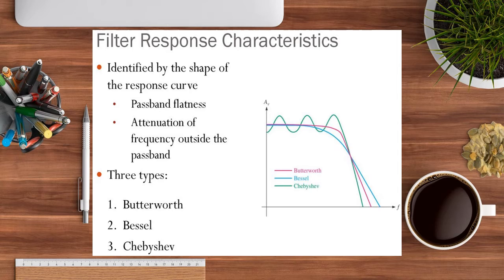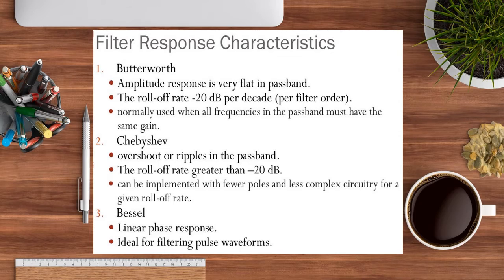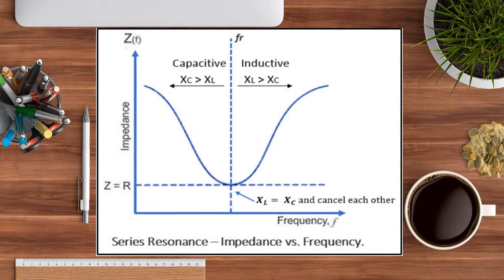Frequency response is important. The filter response characteristics — pass band, attenuation, and roll-off — depend on the method chosen: Butterworth, Chebyshev, or Bessel. Each method gives a different filter response in terms of voltage gain versus frequency. Observing these methods allows us to analyze amplitude, gain, roll-off rates, overshoots, linearity, and differences between ideal and practical cases.